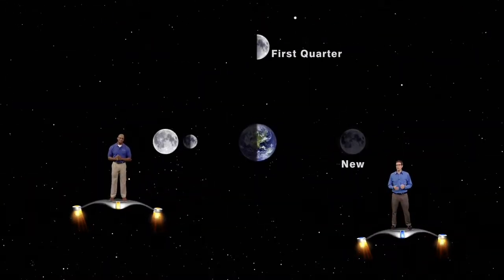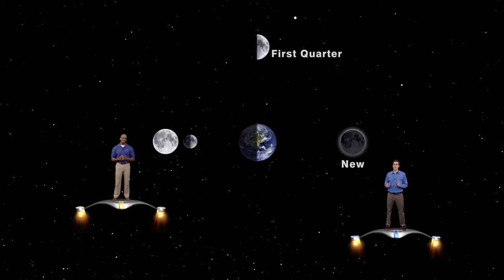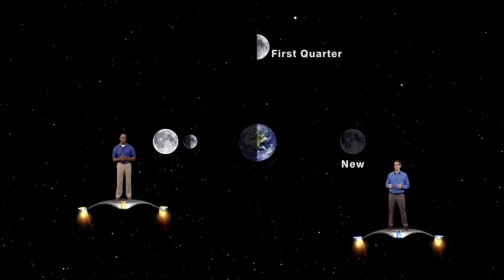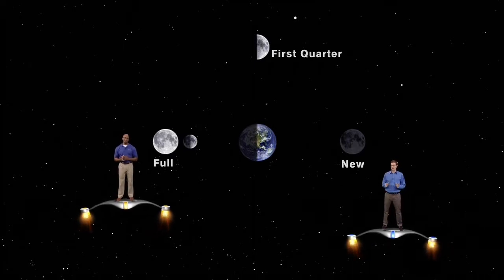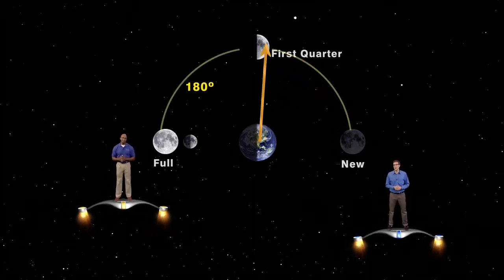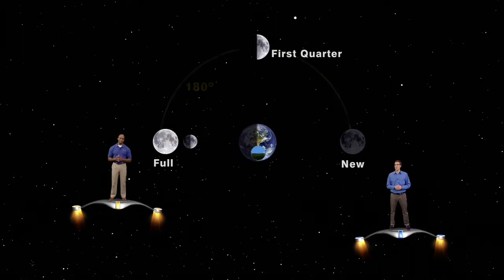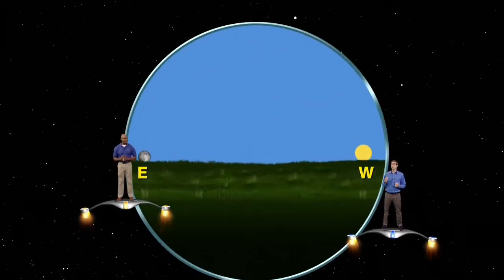Two weeks after the moon was in its new phase, it will have reached the halfway point in its orbit, and the entire daylit side of the moon will be visible. We call this phase full moon. Now that the moon is full, it's 180 degrees away from the sun in the sky. So, when the sun sets, the full moon rises.